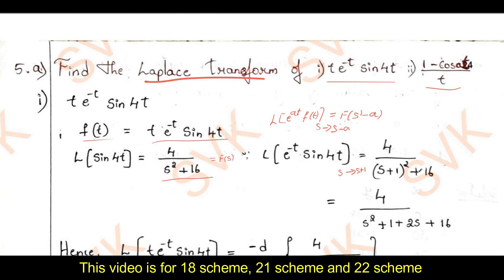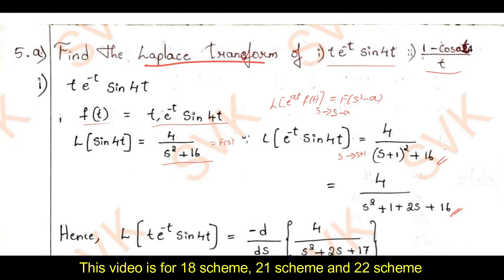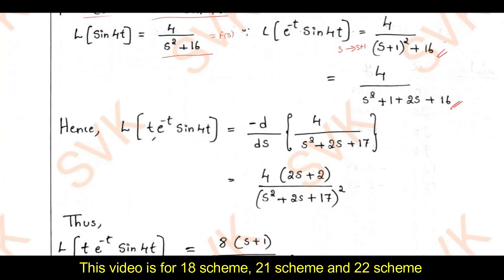So 4/((s+1)² + 16) will be the result after applying the shifting property. Expanding this gives F(s) = 4/(s² + 2s + 17). Then to handle the factor of t, the Laplace of t·e^(−t)·sin(4t) is given by −d/ds of 4/(s² + 2s + 17).